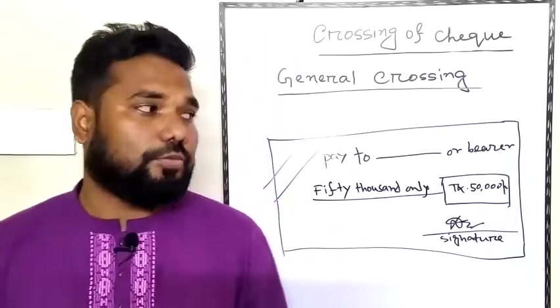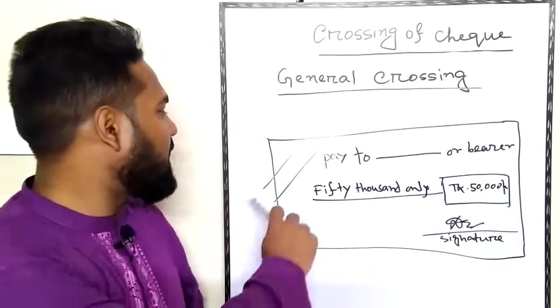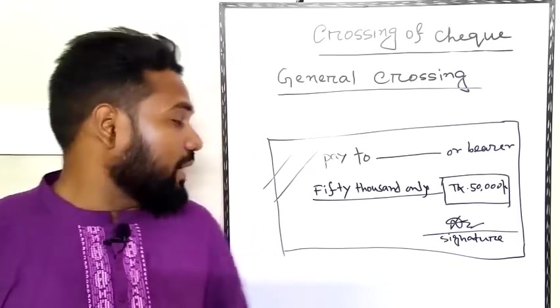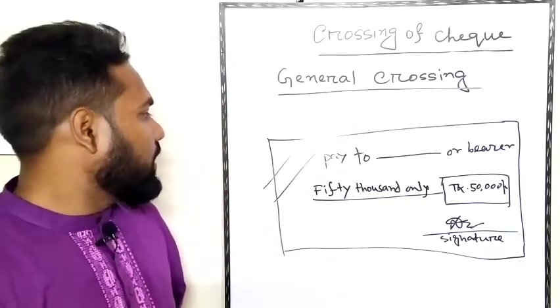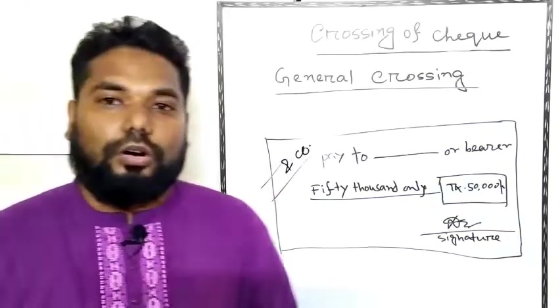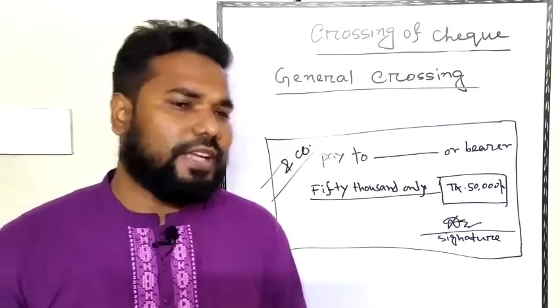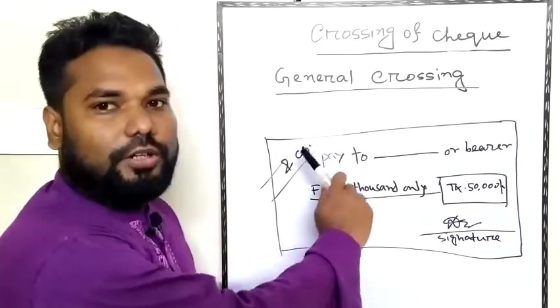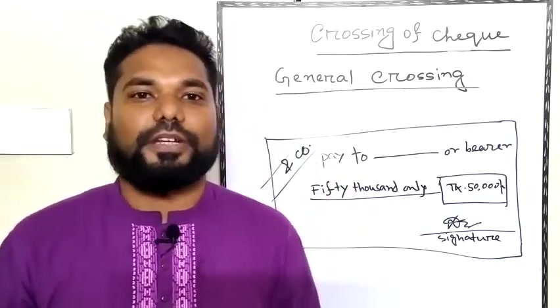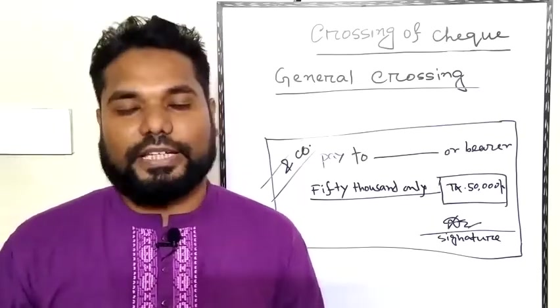Let's discuss general crossing. A check is crossed to ensure that the check payment will be transferred to the bank account and not as cash payment.